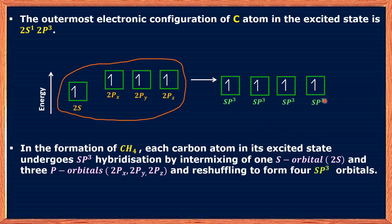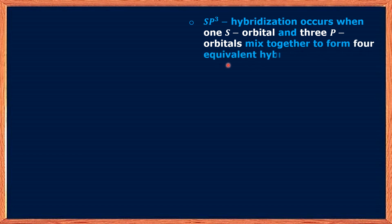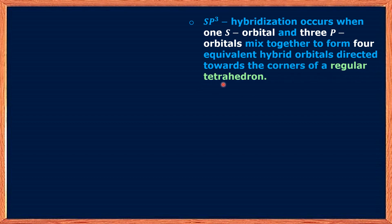These are the SP3 orbitals. When the s orbital and three p orbitals intermix, that is why this hybridization is called SP3 hybridization. After intermixing, we get four SP3 hybrid orbitals having equal energy and the same shape. SP3 hybridization occurs when one s orbital and three p orbitals mix together to form four equivalent hybrid orbitals directed toward the corners of a regular tetrahedron.